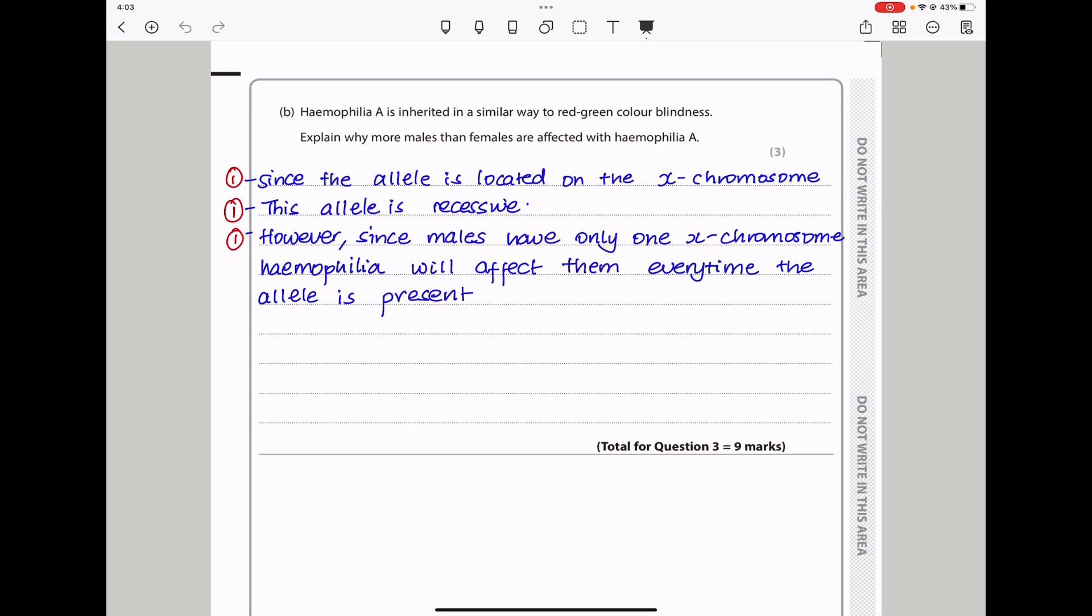So here I say since the allele is located on the X chromosome, this allele is recessive. However, since males have only one X chromosome, Haemophilia A will affect them every time the allele is present.